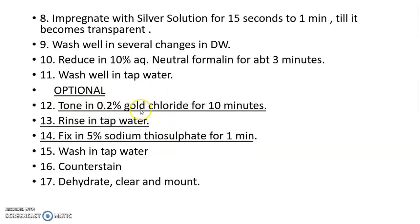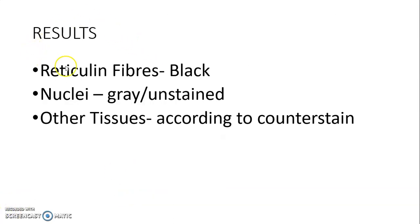After toning with gold chloride and fixing in sodium thiosulphate, wash in tap water. Then apply counter stain — haematoxylin, van Gieson, or other stains. After counter staining, dehydrate the sections, clear with xylene, and mount with DPX. The reticulin fibers will stain black. The nuclei are gray or unstained, while other tissues take the color of the counter stain used.